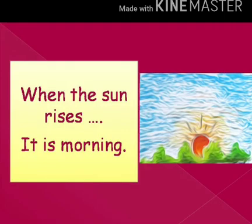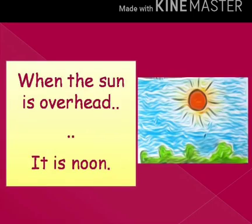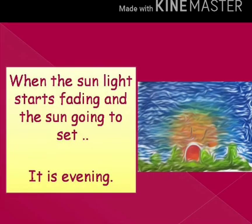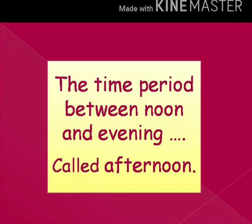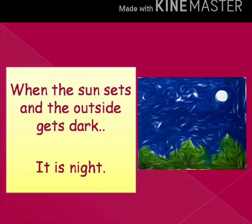When the sun rises, it is morning. When the sun is overhead, it is noon. When the sunlight starts fading and the sun is going to set, it is evening. The time period between noon and evening is called afternoon. When the sun sets and the outside gets dark, it is night.